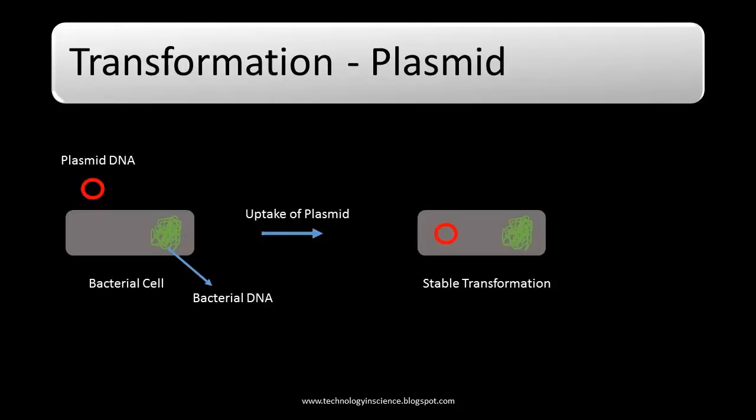Artificial transformation is carried out in the laboratory by a variety of techniques, including treatment of cells with calcium chloride, which renders the membrane more permeable to DNA. This approach succeeds even with species that are not naturally competent, such as E. coli.